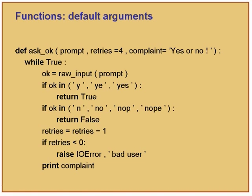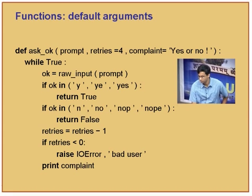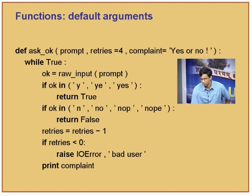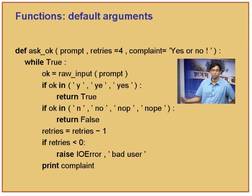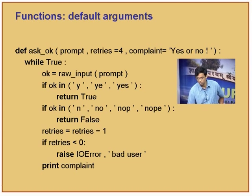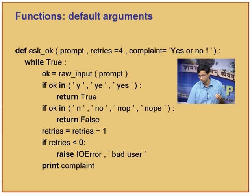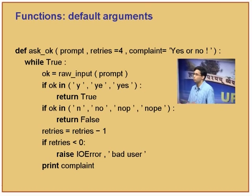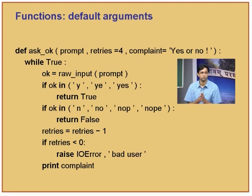Inside we have a while loop. While True is an infinite loop because the condition is always true. First, ok = raw_input(prompt) — raw_input gives the user a prompt and returns the value entered. The ok value is going to be a string. If ok is in certain values, return True. If ok is in the other things, return False.